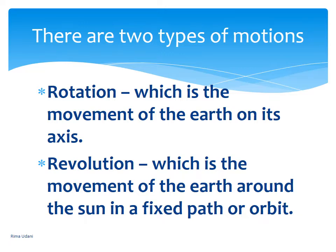Today we are going to learn about the motions of the earth — that is the third chapter of your geography. There are two motions of the earth: one is rotation, which is the movement of the earth on its axis, and the second is revolution, which is the movement of the earth around the sun in a fixed path or orbit. We will learn about both of them in detail.